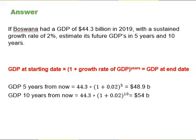For Botswana's GDP 10 years from now, we take GDP today — which is $44.3 billion — multiply by 1 plus 2%, and raise to the power of 10 years. We get the future GDP 10 years from now of $54 billion. This is pretty easy!